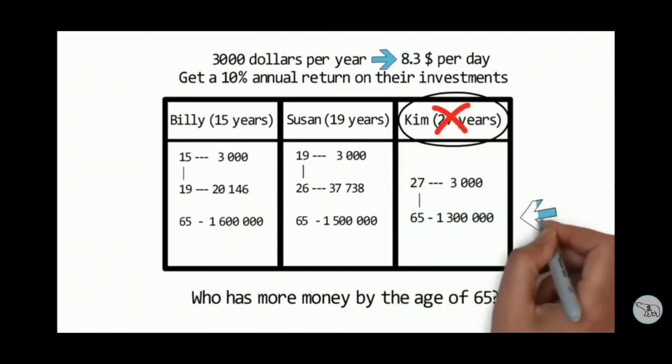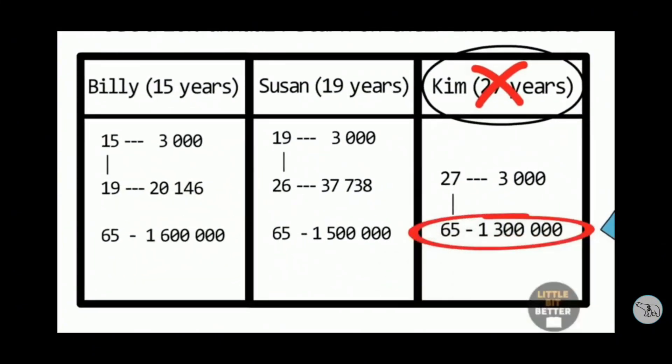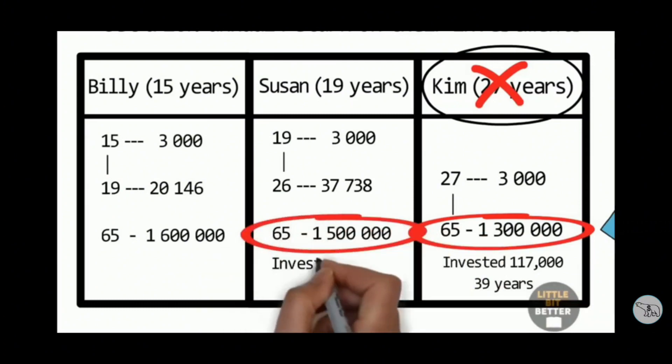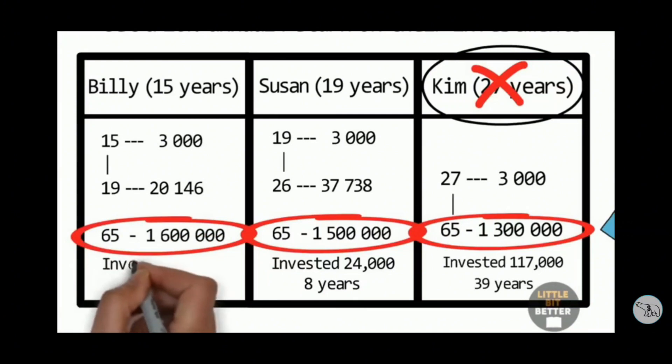Here are the numbers for the age of 65. Kim has roughly $1.3 million. She invested $117,000 in total. The investment period is 39 years. Susan has $1.5 million. She invested $24,000 in total within eight years. Finally, Billy has $1.6 million. He invested only $15,000. The investment period is five years.